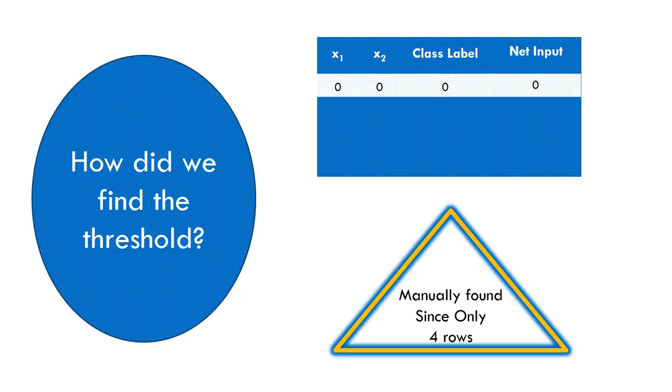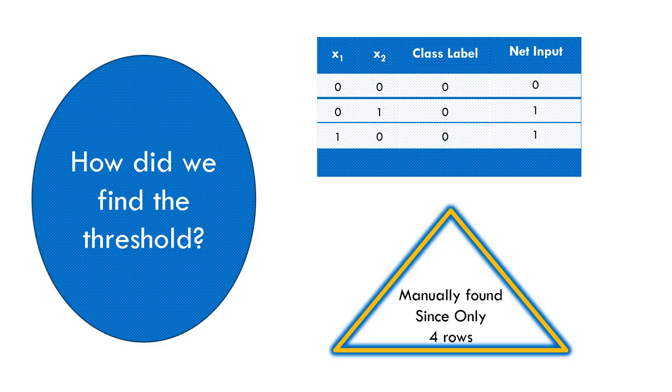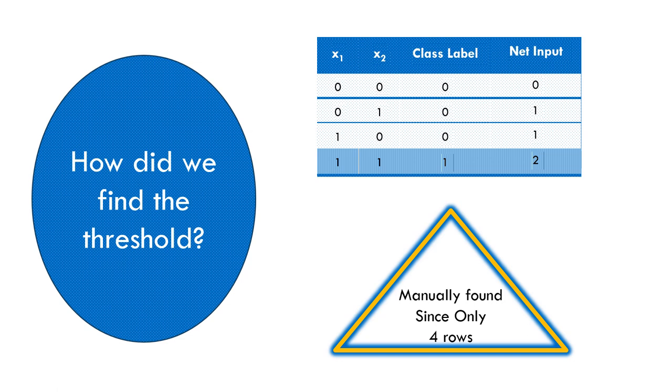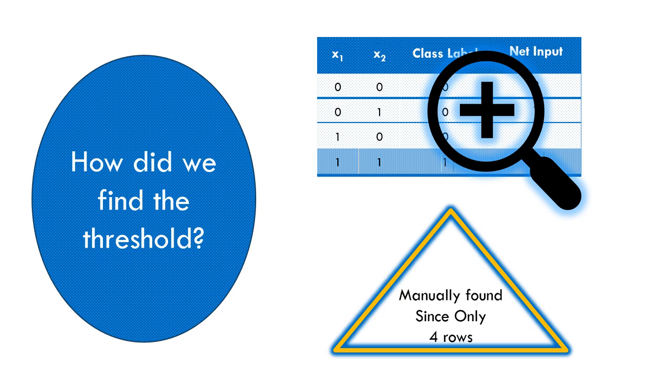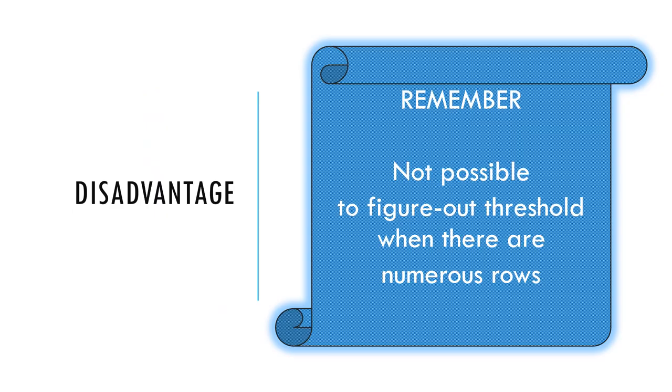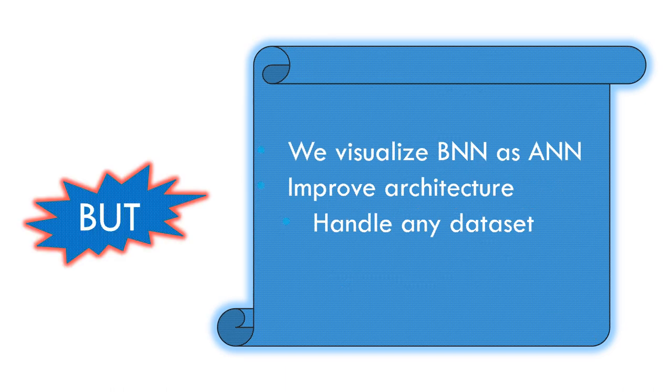When we tried to find the threshold to split the classes, we manually looked at each row in the training set and figured it out. This is fine as long as the number of samples in the training dataset is small. Can you imagine how we will figure out the threshold when there are numerous rows? This is a disadvantage of the MCP neuron, but McCulloch and Pitts have given us a way to visualize the biological neural network as an artificial neural network. Now all we must do is improve this architecture to learn all types of datasets.